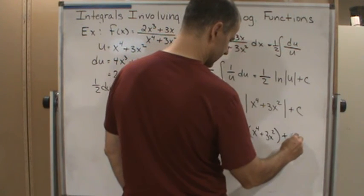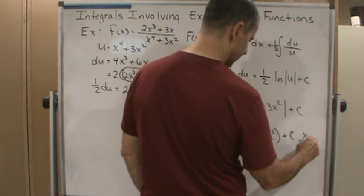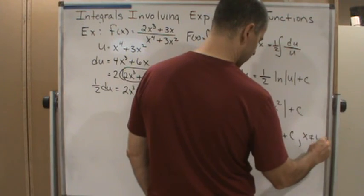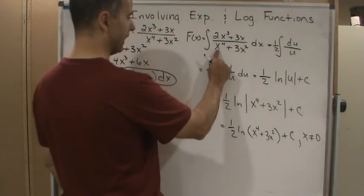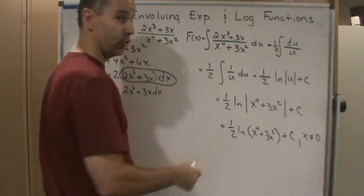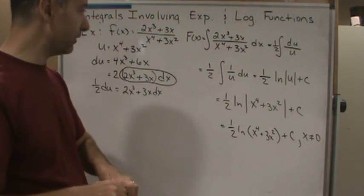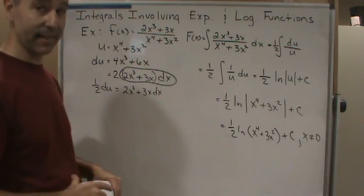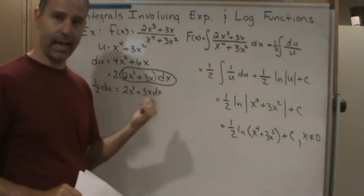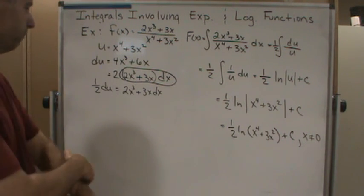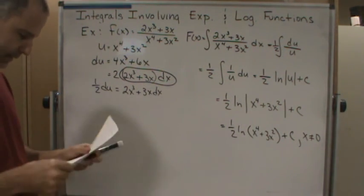And then I'm going to notate x is not equal to 0. Obviously x can't equal 0 here because it's not in the domain. Right, x is not in the domain of this function, just like in the last example x equal to 10 was not in the domain of the function.